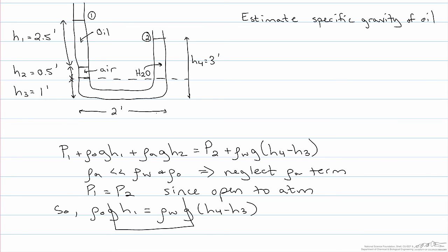The gravity term on each side cancels out, and the specific gravity being defined as the density divided by the density of water simply becomes the ratio of H4 minus H3 over H1. Plugging in numbers, we get the result that the specific gravity of the oil is approximately 0.8.